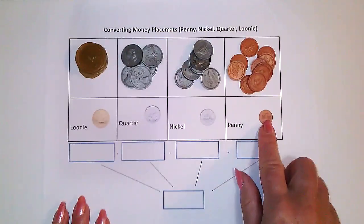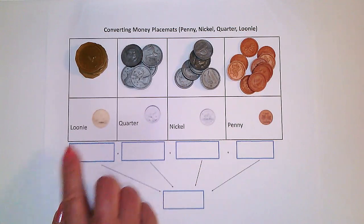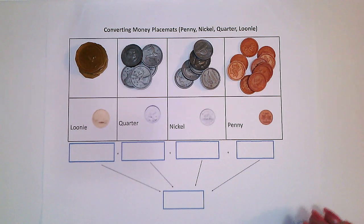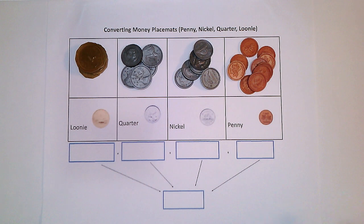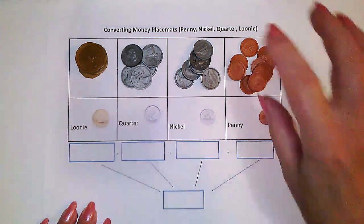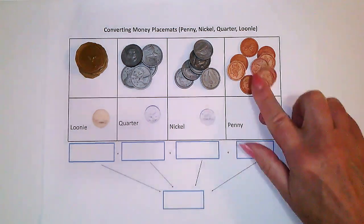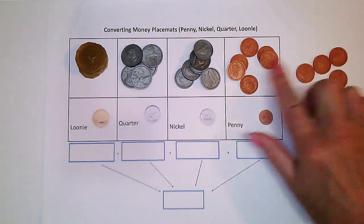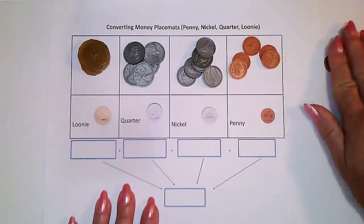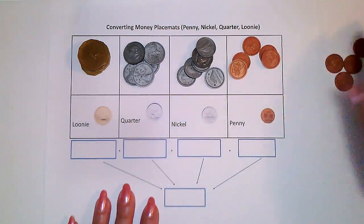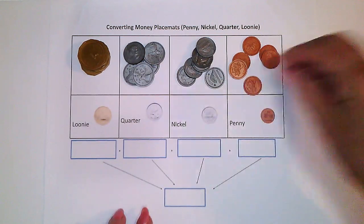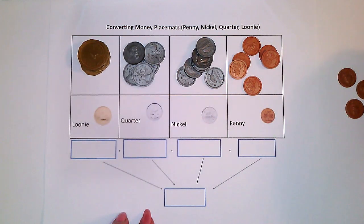I've given them a map this time that has penny, nickel, quarter, and loonie. So what I'm trying to get at is: can they convert? For every five pennies, trade them for a nickel. Every time they have five nickels, can they trade them for a quarter? And for four quarters, can they make a loonie? They sort out whatever coins I want them to work with, throw randomly whatever they have on there, and that means every student will have a little bit of a different starting point.